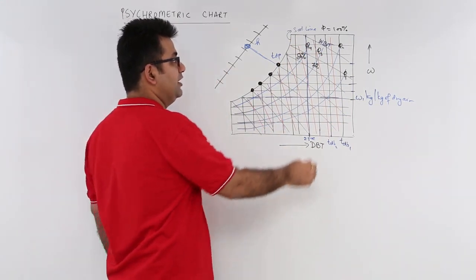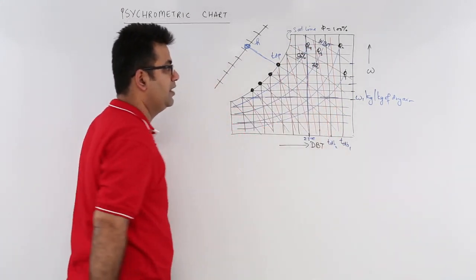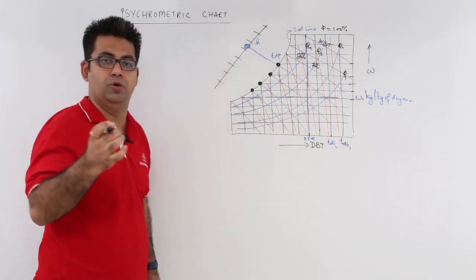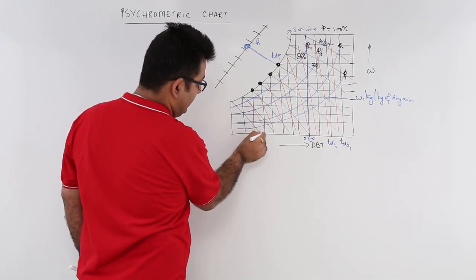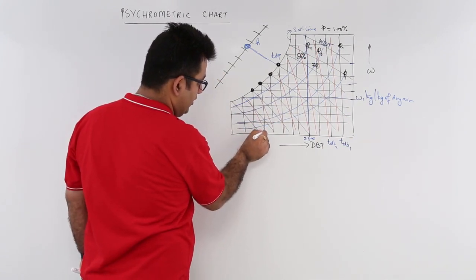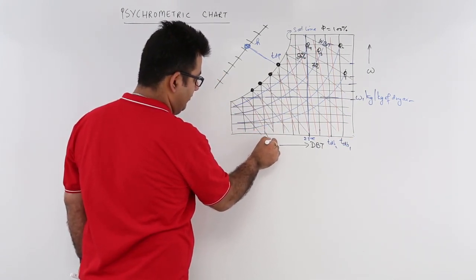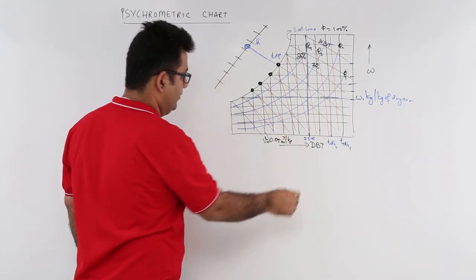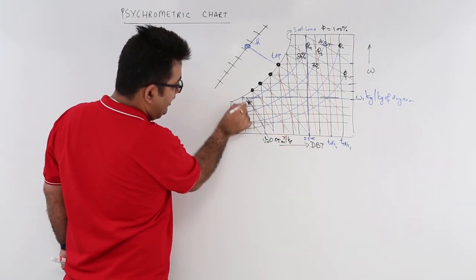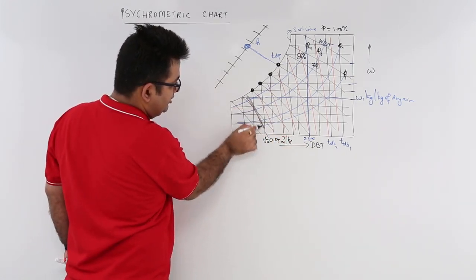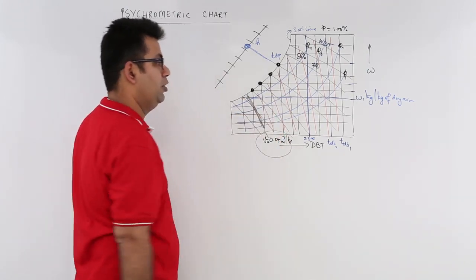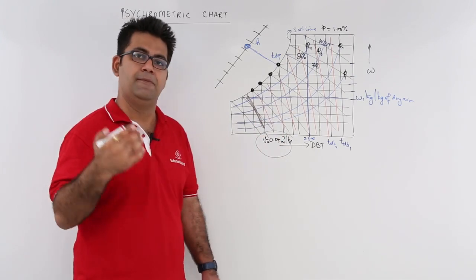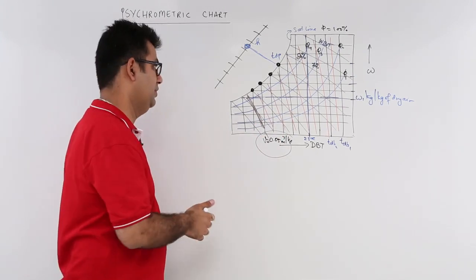Now we come to the red colored lines. These red colored lines show specific volume. For example, this line shows a specific volume of 0.85 cubic meters per kg. This entire line shows the specific volume of the air-vapor mixture at that particular temperature and pressure condition.